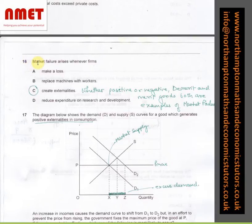In question number 16, market failure arises whenever firms create externalities, whether positive or negative. Merit and demerit goods both are examples of market failure.